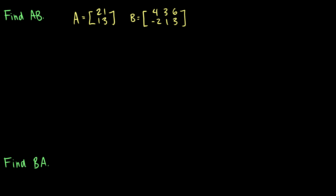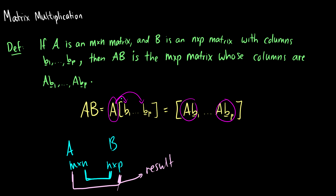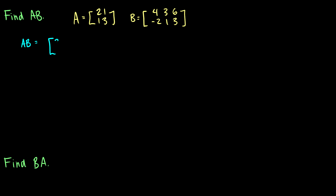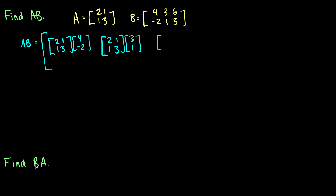We have AB. We're going to skip a step and write A times B1 through Bp, putting A and multiplying it by each of the column vectors. So we take [2,1; 1,3] and multiply it by [4, -2], then by [3, 1], and then by [6, 3]. We just broke it down into something we already know how to do — multiplying a matrix times a vector, Ax = b.